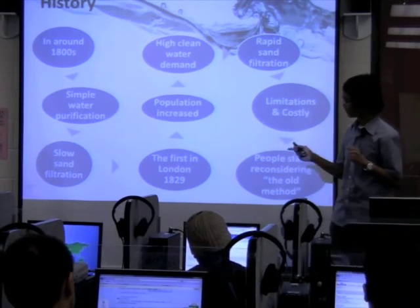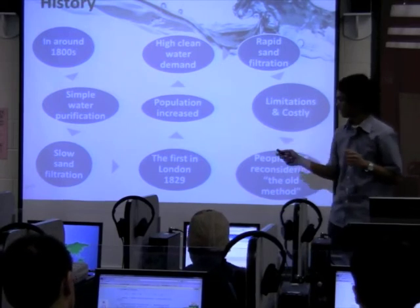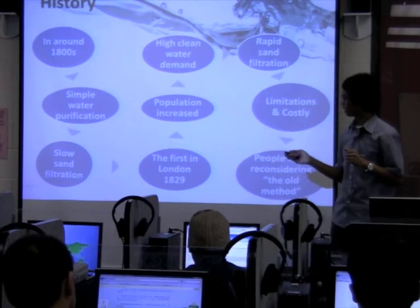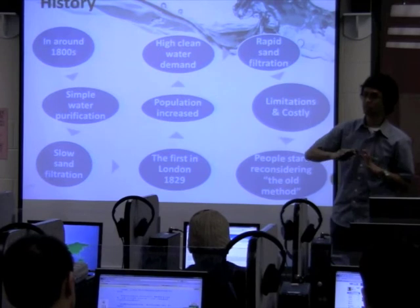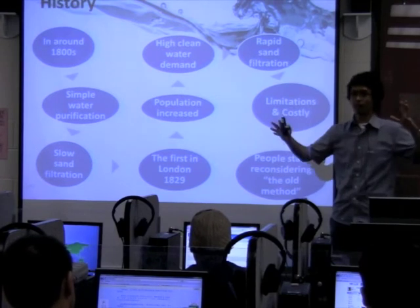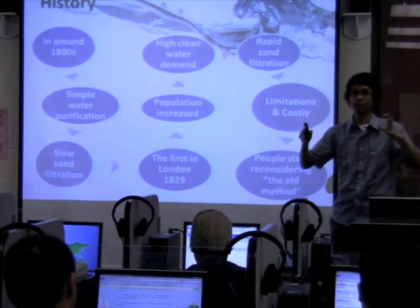The first slow sand filtration was installed in London in 1829. But since the population got bigger, there was also a high demand for clean water.